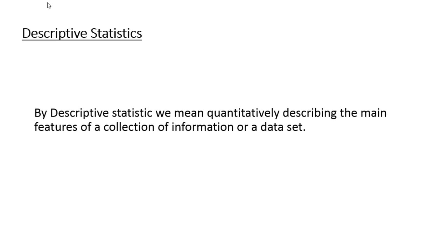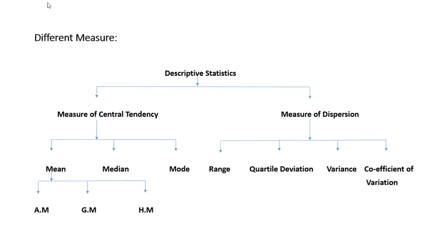All these are measures of descriptive statistics. Measures of descriptive statistics can be broadly classified in two parts: measure of central tendency and measure of dispersion.